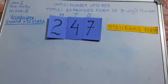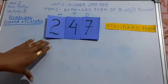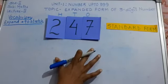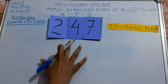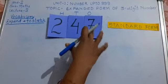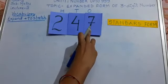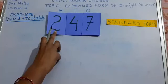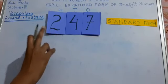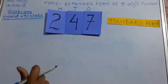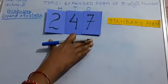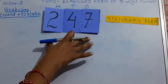Now see here. I have a three-digit number — that is 247. The digit at the 1's place is 7. The digit at the 10's place is 4. And the digit at the 100's place is 2. This is the standard form of the number.